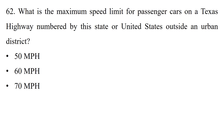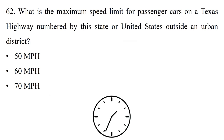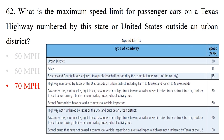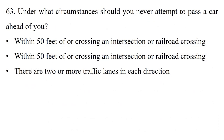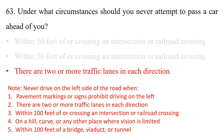Question: What is the maximum speed limit for passenger cars on a Texas highway numbered by this state or United States outside an urban district? Option 1: 50 miles per hour. Option 2: 60 miles per hour. Option 3: 70 miles per hour. The answer is option 3: 70 miles per hour. Question: Under what circumstances should you never attempt to pass a car ahead of you? Option 1: Within 50 feet of an intersection or railroad crossing. Option 2: Within 50 feet of an intersection or railroad crossing. Option 3: There are two or more traffic lanes in each direction. The answer is option 3: there are two or more traffic lanes in each direction.